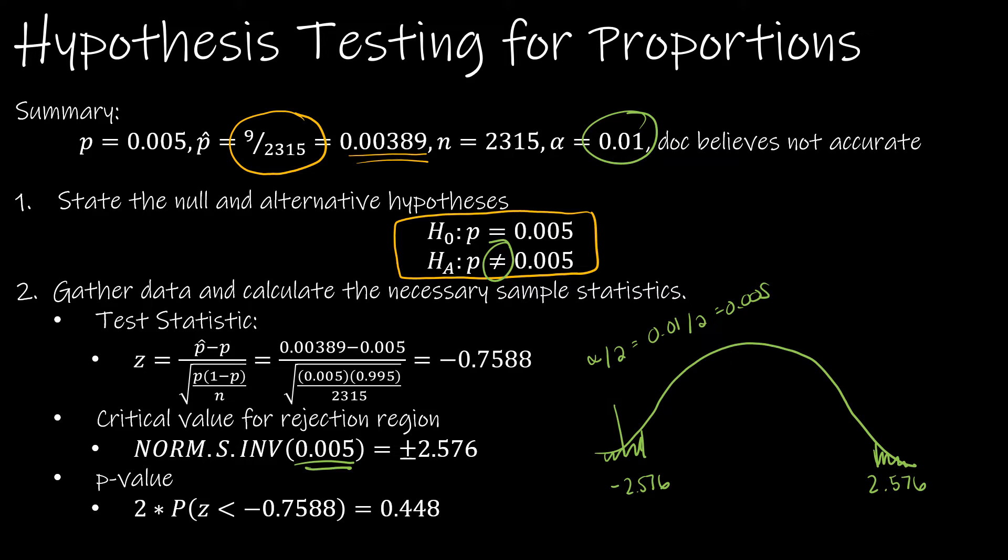So again, if I'm looking at the rejection region, my critical value is way on the outside here, but my z-score, here's zero in the middle, my z-score is much closer, negative 0.7588. So I can see certainly that I should fail to reject the null.